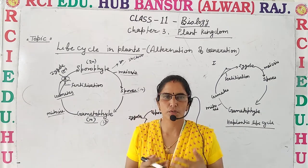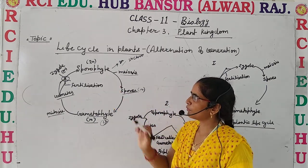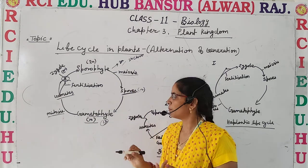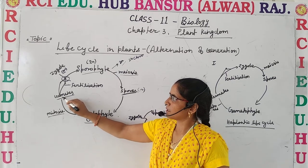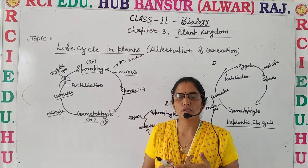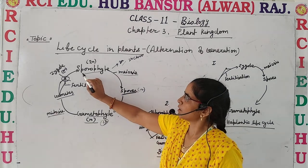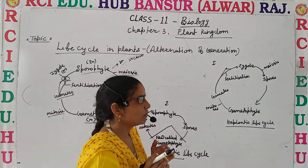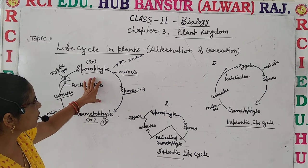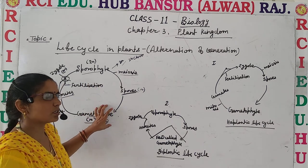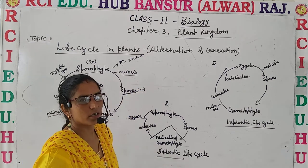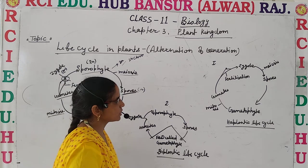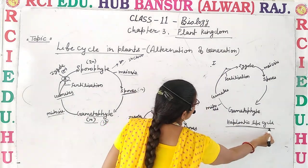The main things to keep in mind: the sporophytic phase is always diploid, whereas the spores are the first cell of the gametophytic phase, and gametes combine to form a zygote, so the zygote is the first cell of the sporophytic phase. Since plants show alternating sporophytic and gametophytic stages, the overall process is known as alternation of generation. Now let's discuss the three types of life cycles. The first one is the haplontic life cycle.